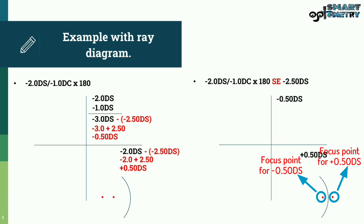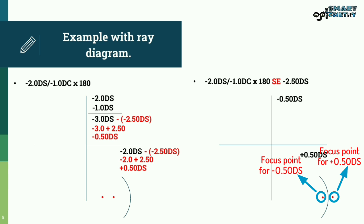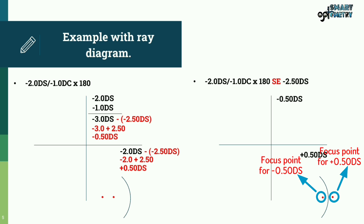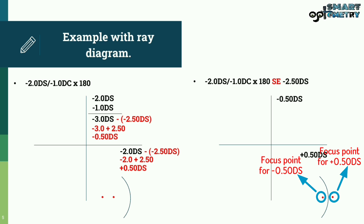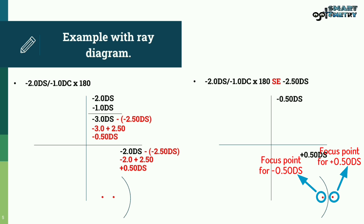Both of these focusing points are situated equally distant from the retina — one in front and one behind. That's why it won't affect the image quality and the image won't be distorted, even if the examiner has sphero-cylindrical power when using instruments like the slit lamp or ophthalmoscope.